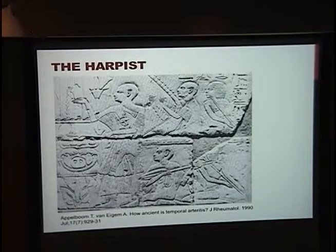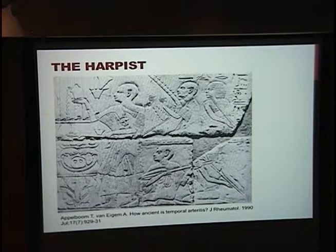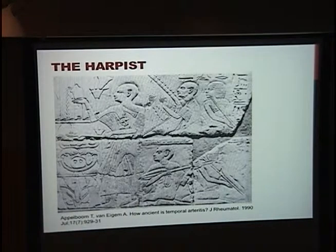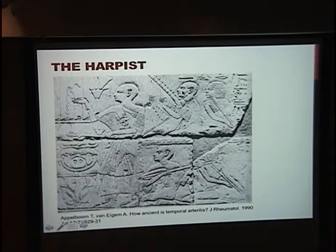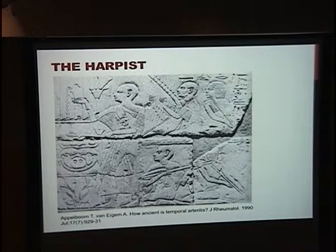In terms of the history of temporal arteritis, it is a relatively new disease, described mostly in the last 100 years. The only hint of description in ancient times is a picture on the tomb of an Egyptian pharaoh showing a harpist who looks really sick, may have some thickening of his temporal artery, and may be blind — based on his looking-into-space glance compared to the other people. That's a stretch, but it reflects that this is possibly a newer disease.